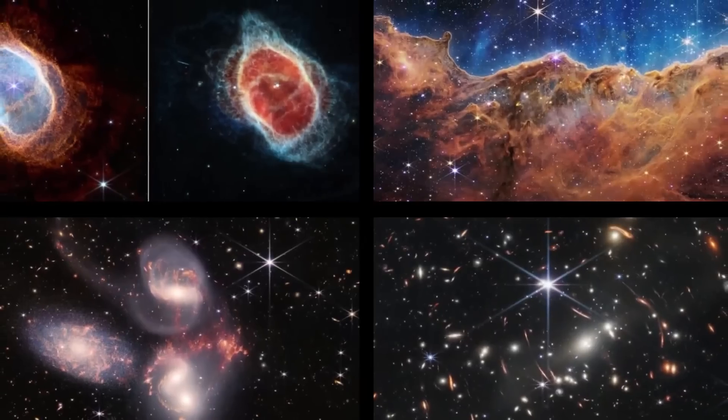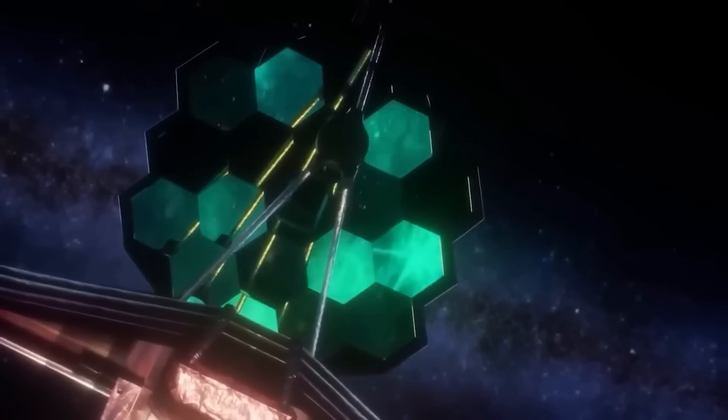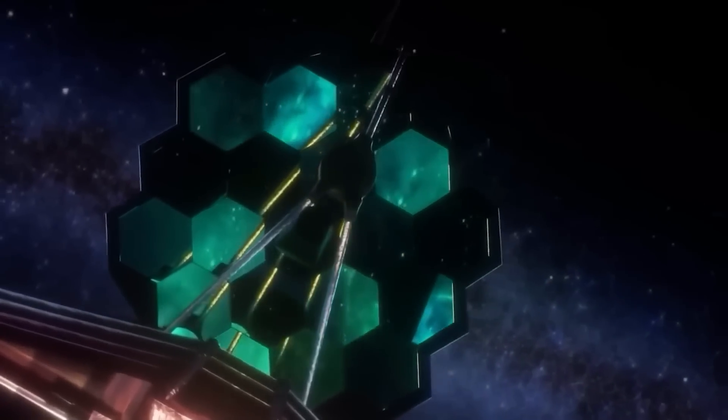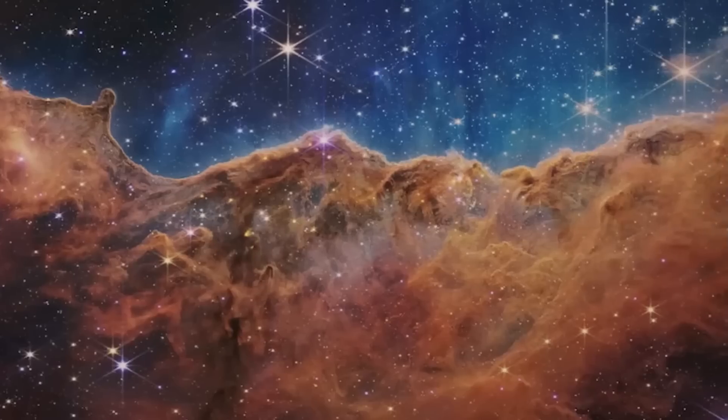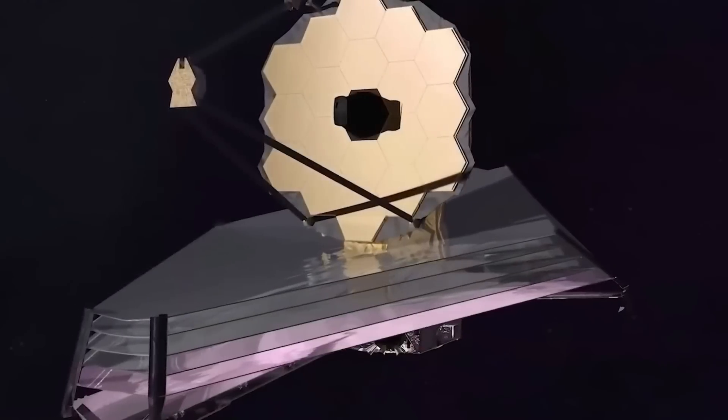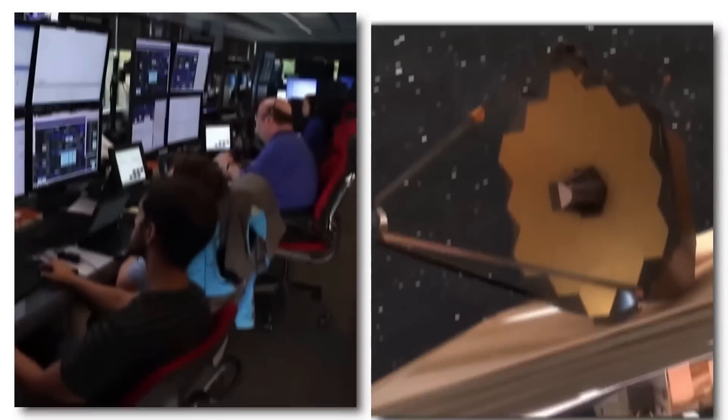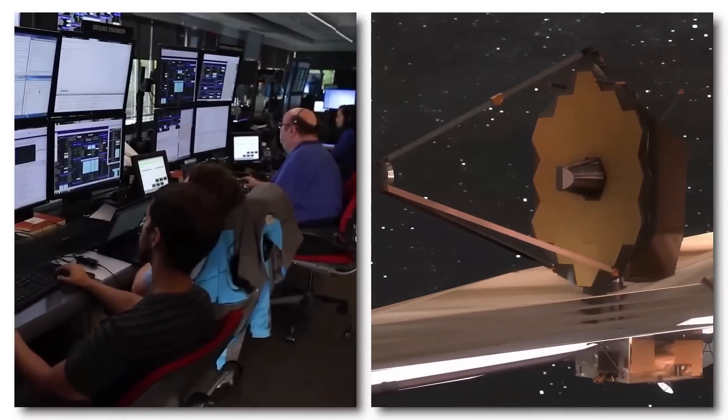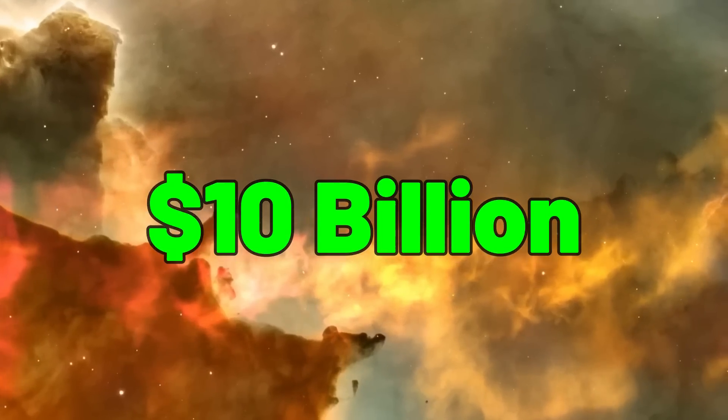The telescope itself needed to be deployed next. To provide a sharp image, the 18 hexagonal segments that make up the JWST's primary mirror must be precisely aligned. This procedure comprised slowly deploying the primary mirror, extending the telescopic support structure, and unfolding the sunshield. The mirror needed to be precisely aligned for scientific observations after it was fully deployed. In this method, even the smallest error would be equivalent to throwing away more than $10 billion.